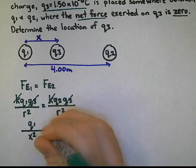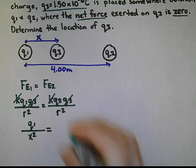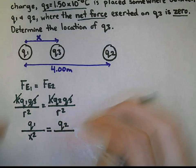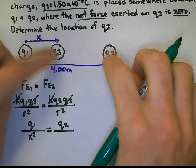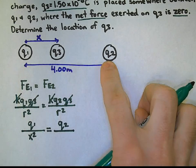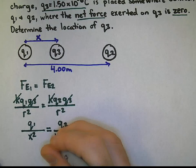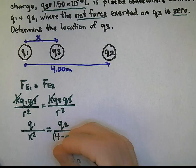And that will be equal to Q2 all over the distance between Q2 and Q3, which is actually 4.0 minus this x value here, and that must be squared.